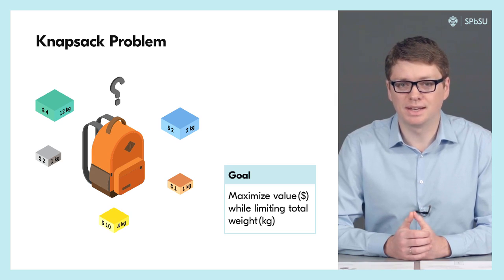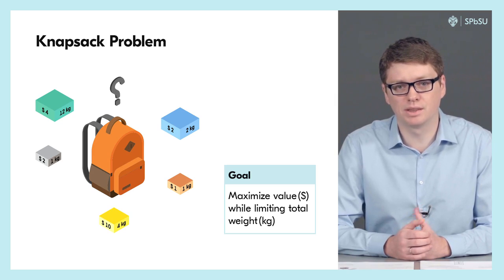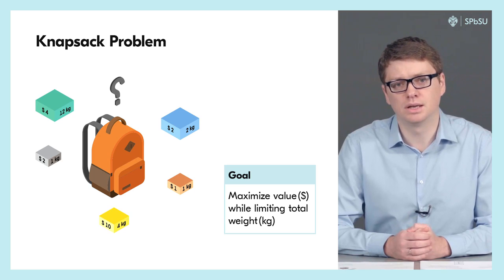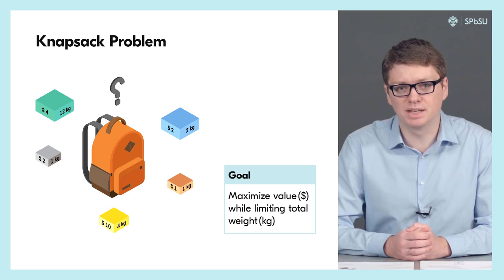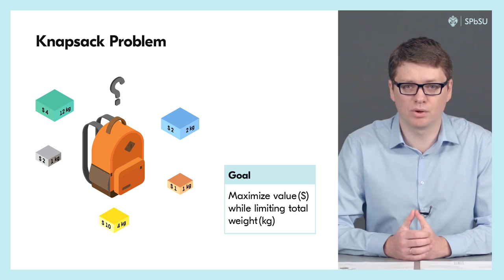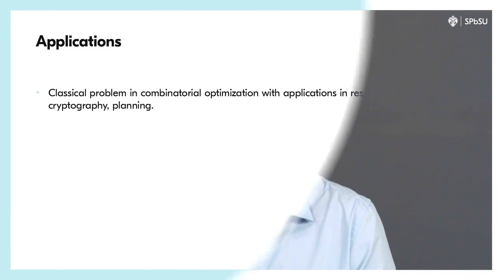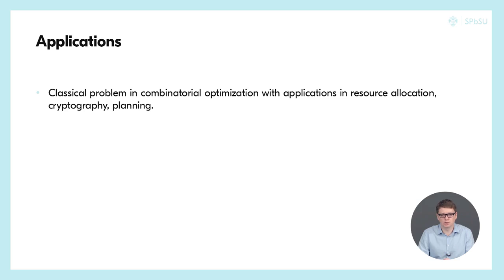We are given a knapsack with a limited capacity together with a collection of items with known weights and values. Our goal is to select a sub-collection of these items so that their total weight does not exceed the capacity of our bag while the total value is as large as possible. This is a classical problem in combinatorial optimization with hundreds of applications in areas like planning, scheduling, resource allocation and others.